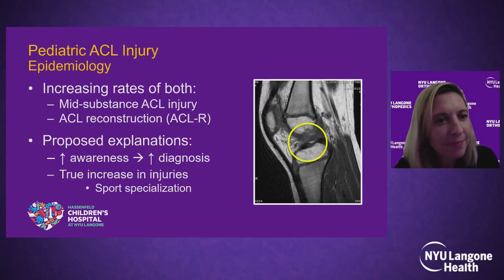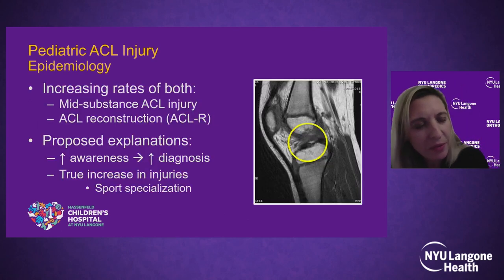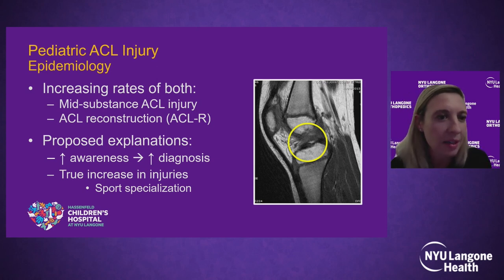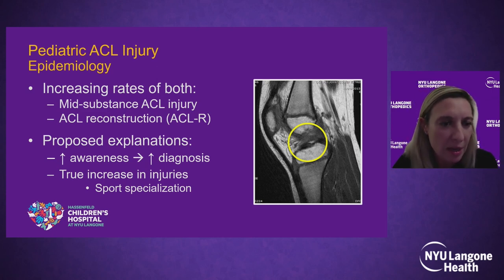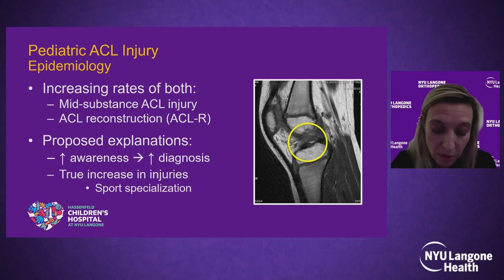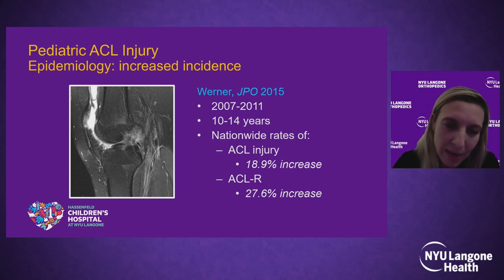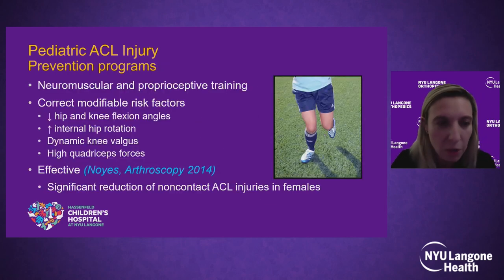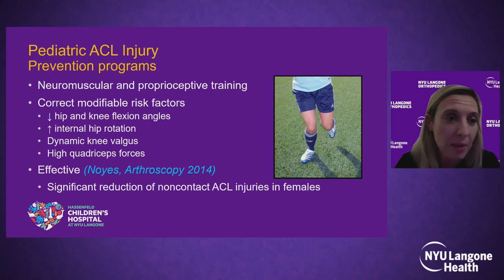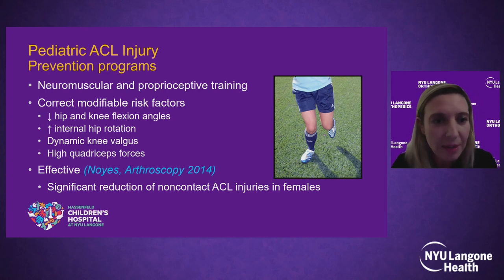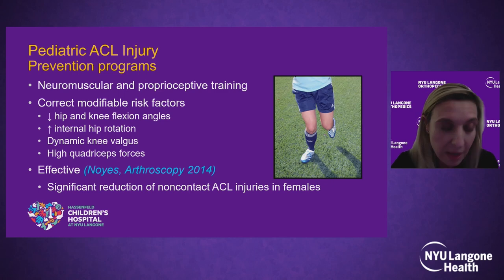I have no disclosures. We've seen a rapid and steep increase in the rate of ACL injuries in kids over the last 10 to 20 years — both the injury itself as well as reconstruction. Maybe we're better at diagnosing this, or maybe it's an actual increase due to things like sports specialization. One study highlights that over the last decade, we saw a 20% increase in ACL injury and a nearly 30% increase in reconstruction rates in the pediatric population in the US. This is frustrating because prevention programs exist and are effective.